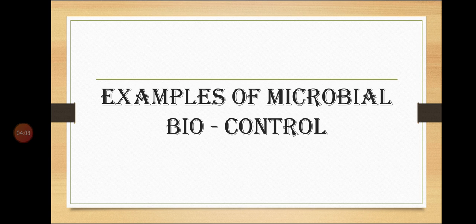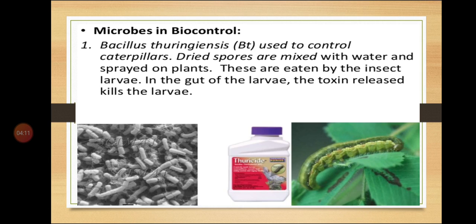Now we will study two examples of microbial biocontrol agents. The first is Bacillus thuringiensis — BT crop — which is a very important topic from your exam point of view. BT is a soil bacterium used to control caterpillars. The dried spores of Bacillus thuringiensis are mixed with water and sprayed on plants. When the spores are eaten by insect larvae, a toxin named cry protein is released in the gut of the larvae and it kills the larvae.